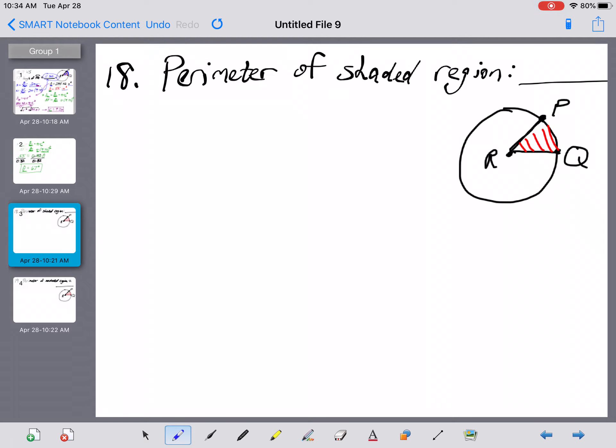Now, number 18 is asking you for the perimeter of the shaded region, what we have there in red. So what we need to realize right here is that there are really three pieces, or three lengths, that we need to come up with here for perimeter.